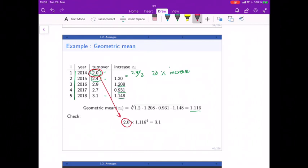and we say we've got this increase 4 times, so 1, let's say 11.6 percent increase year by year steadily, we have to multiply them, so to the power of 4, then we get 3.1, which is exactly the turnover in year 2018. So with ratios and increases we use the geometric mean.